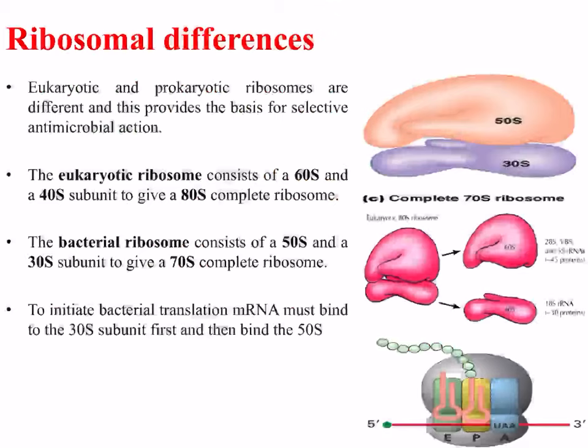Until a stop codon is reached, where no amino acid is added and the polypeptide detaches from the complex. Eukaryotic and prokaryotic ribosomes are different, and this provides the basis for selective antimicrobial action. The eukaryotic ribosome consists of a 60S and a 40S subunit to give an 80S complete ribosome. The bacterial ribosome consists of a 50S and a 30S subunit to give a 70S complete ribosome.